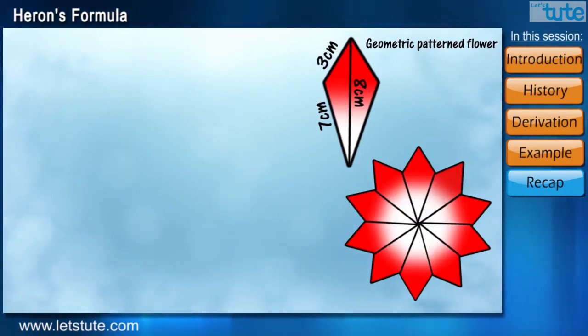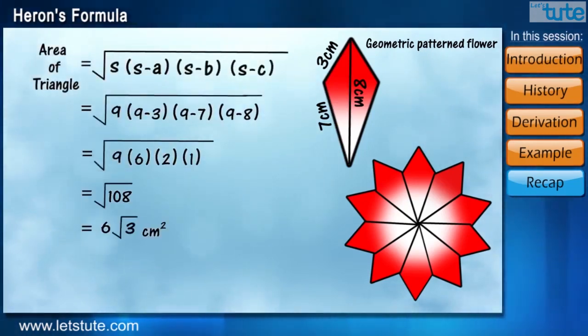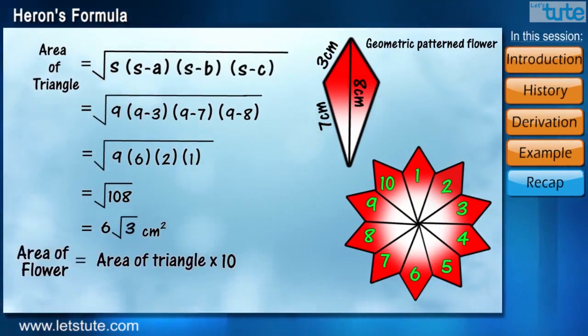This may look complicated, but it's very simple. All we have to do is find the area of one half of the petal using Heron's formula. Now, as there are total 10 petals, we will multiply it by 10 to get the area of the flower. Right?